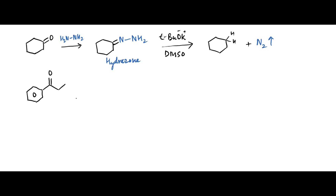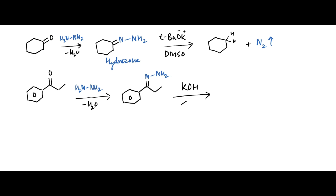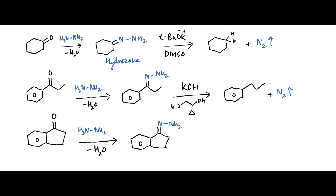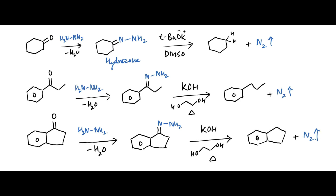Similarly, a ketone upon treatment with hydrazine forms a hydrazone, which is then subjected to heating in the presence of KOH and ethylene glycol to form a reduced product wherein the carbonyl group has changed into a methylene group upon loss of N2. Likewise, another ketone reacts with hydrazine to form its corresponding hydrazone, which upon heating with KOH in ethylene glycol solvent loses a molecule of N2 to form the reduced product.